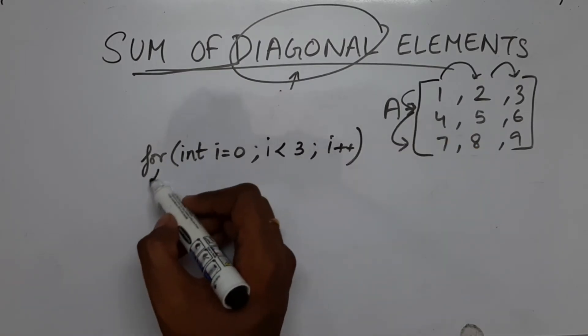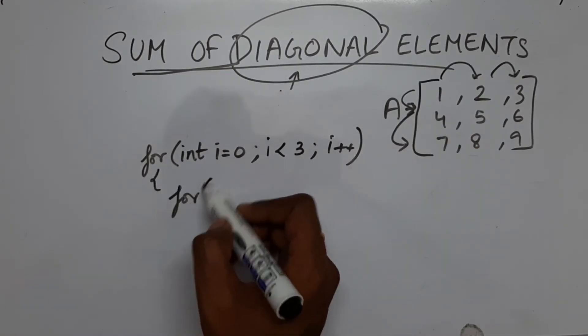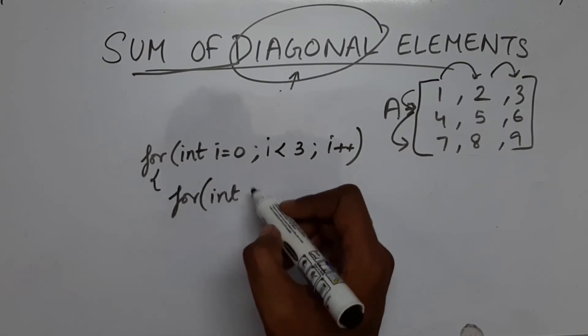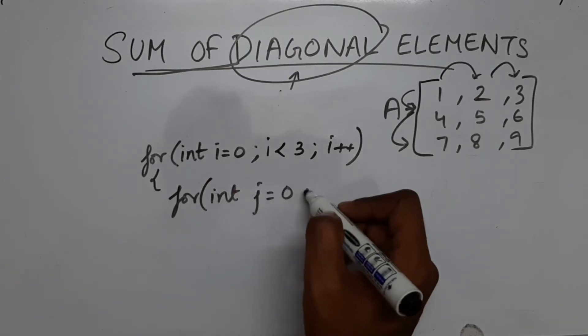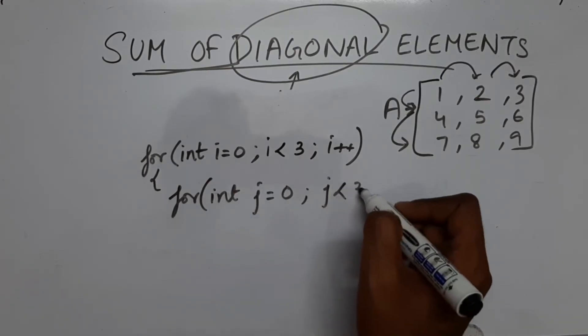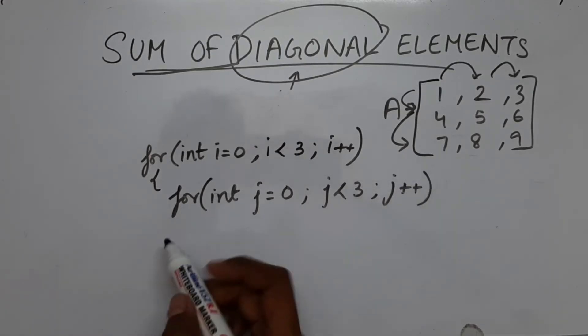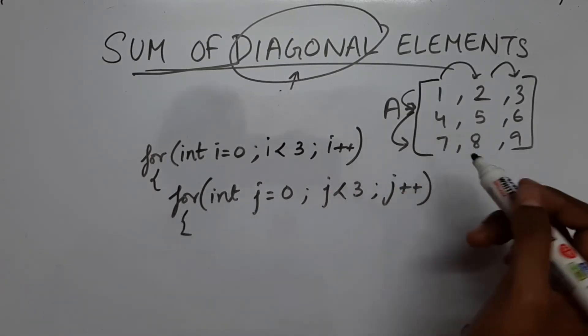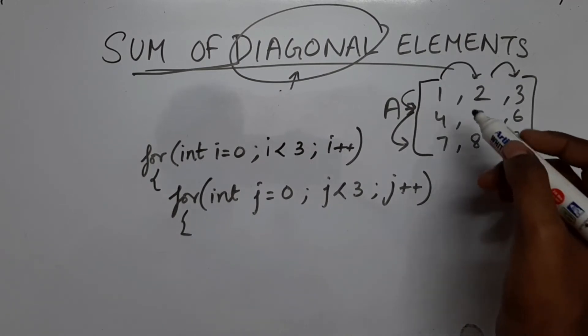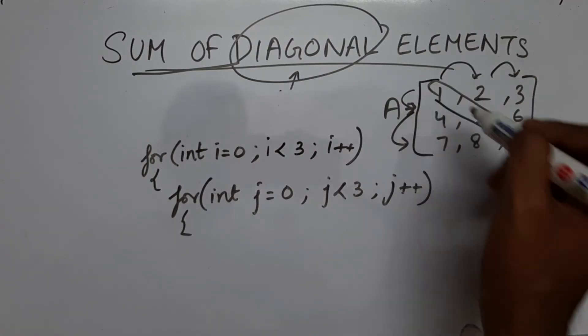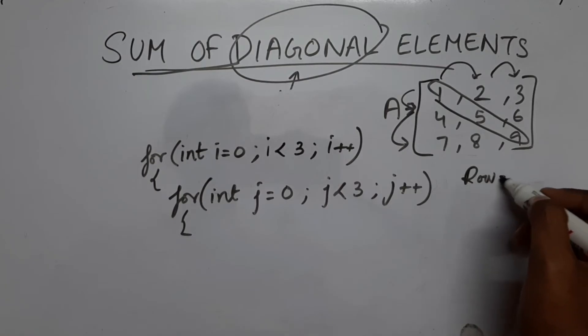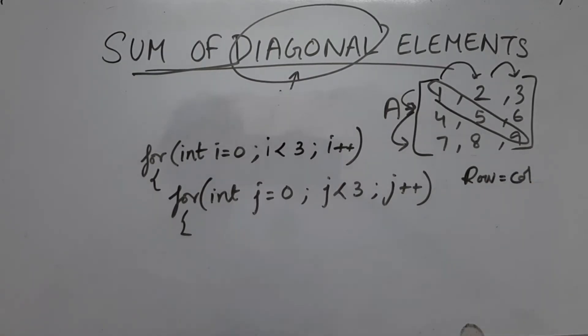So this is for the row and I am going to nest another for loop. I am going to say int j equal to 0 j less than 3 j plus plus. So what is the condition or what is the thing which we observed which is common for the diagonal element?